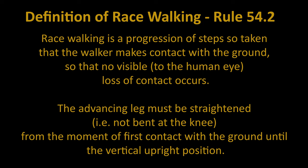Racewalking, as defined by World Athletics Rule 54.2, states that racewalking is a progression of steps so taken that the athlete makes contact with the ground so that no visible, to the human eye, loss of contact occurs, and the advancing leg must be straightened — not bent at the knee — from the moment of first contact with the ground until the vertical upright position. This definition is highly subjective, as there is no objective measure as to what loss of contact to the human eye means.